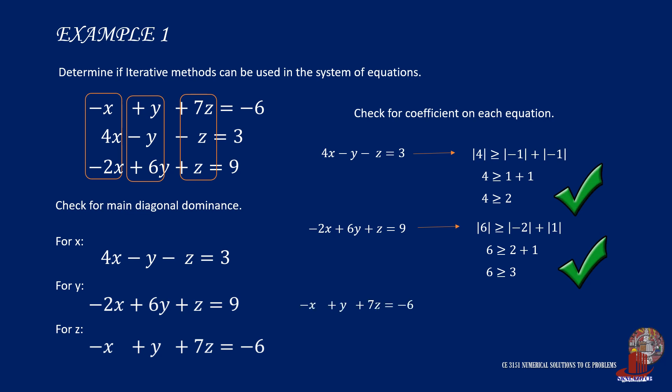For variable z, we check if the coefficient of z is greater than or equal to the absolute values of −1 and positive 1 together. And obviously, it is. Passing the two checks, we can use iterative methods for the system.